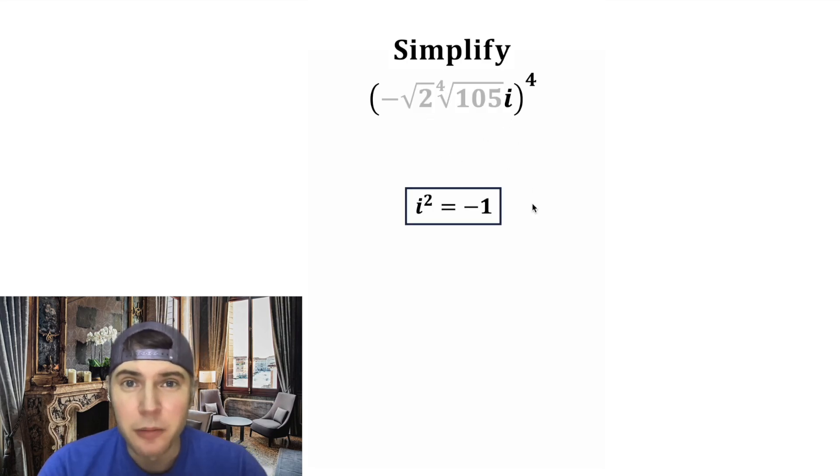i is not just a random variable, it's the imaginary number such that i squared is equal to negative 1. And then everything else is pretty straightforward.